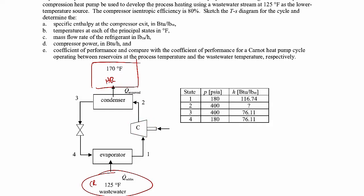We're asked to: sketch the TS diagram for the cycle and determine the specific enthalpy at the compressor exit (state 2); find the temperatures at each of the principal states in degrees Fahrenheit, so states one through four; and find the mass flow rate of the refrigerant in pounds mass per hour.